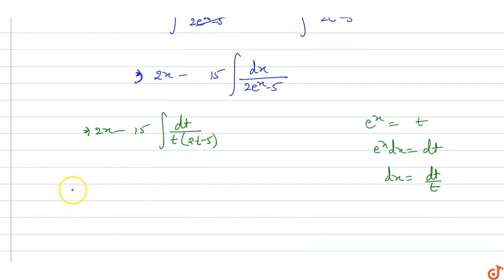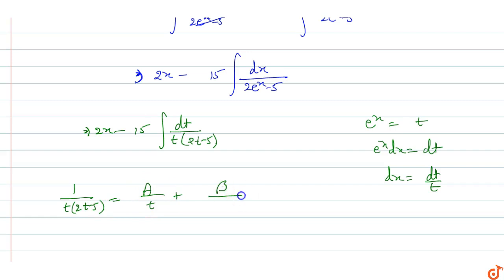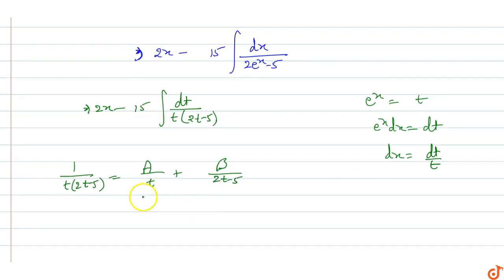We write 1 upon t(2t - 5) as A/t plus B/(2t - 5). Solving: putting t = 0 gives A = -1/5, and putting 2t - 5 = 0 gives B = 2/5.